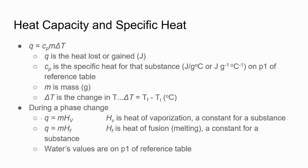During a phase change, we don't have to worry about the change in temperature because during a phase change temperature doesn't change. So we take the delta T out and get two different formulas. Again, these are on page three of your reference table so you don't have to memorize them.